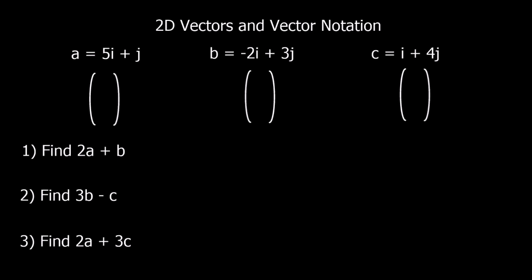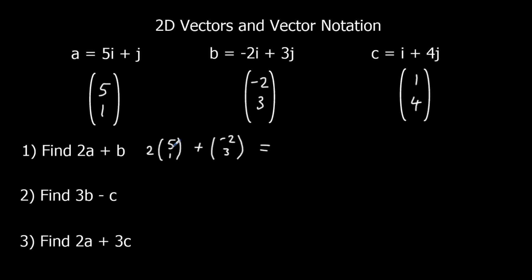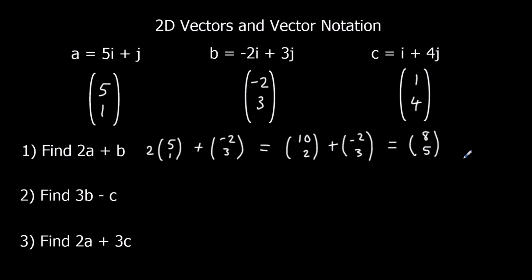So we're going to look at adding and subtracting these vectors. We've got A as (5,1), B as (-2,3), and C as (1,4). For 2A plus B, that means 2 lots of (5,1) plus (-2,3). So 2 times (5,1) gives (10,2), plus (-2,3). Adding the i components: 10 take away 2 is 8. Adding the j components: 2 plus 3 is 5. So the answer is 8i plus 5j.